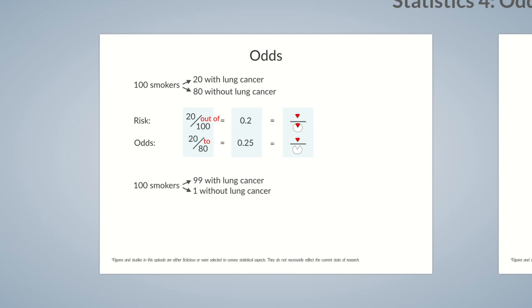What values did you come up with? The risk of smokers developing lung cancer is 99 divided by 100, which is 0.99. In contrast, the odds value is calculated by dividing 99 by 1, which is 99. In this example, you can see that the risk and odds can also differ greatly.